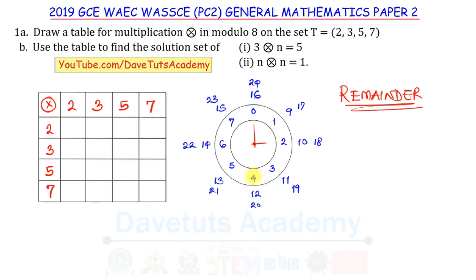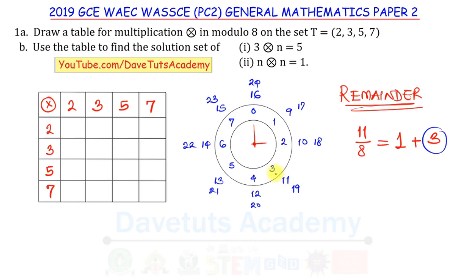For 15: 15 ÷ 8 = 1 remainder 7, so 15 ≡ 7 (mod 8). It is the remainder that gives us the congruent value under modulo 8. For example, 11 ÷ 8 = 1 remainder 3, so 11 ≡ 3 (mod 8) — we write 3 as the answer, not 11.